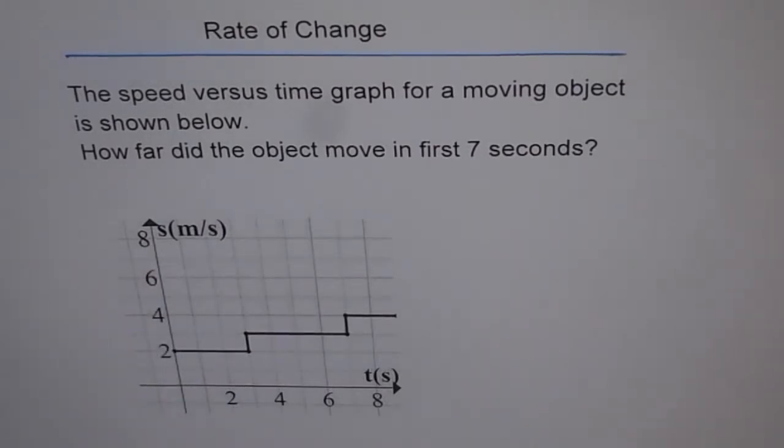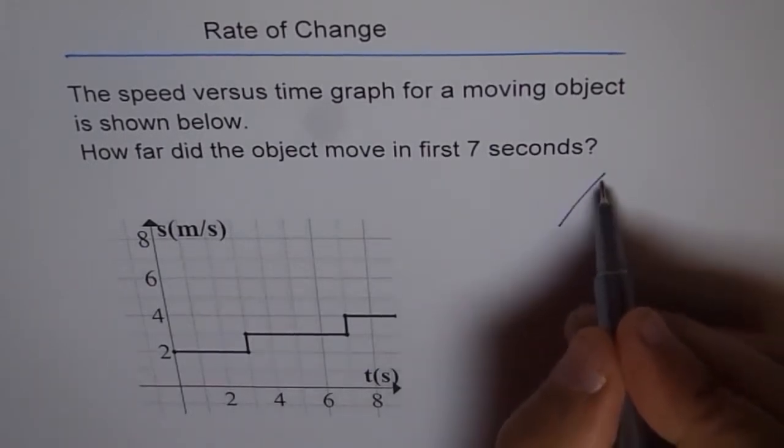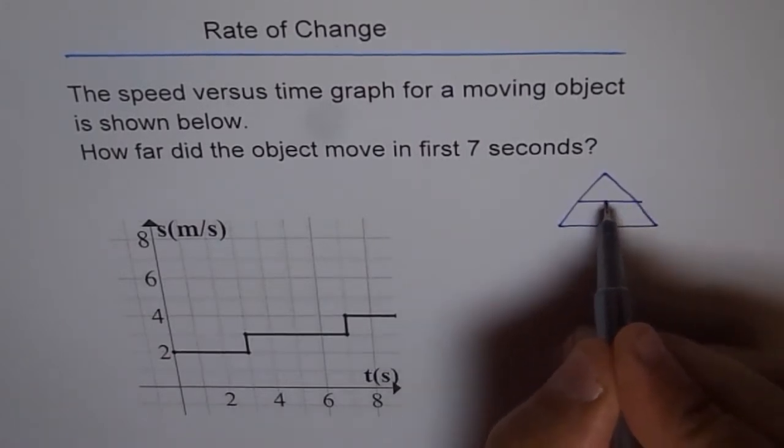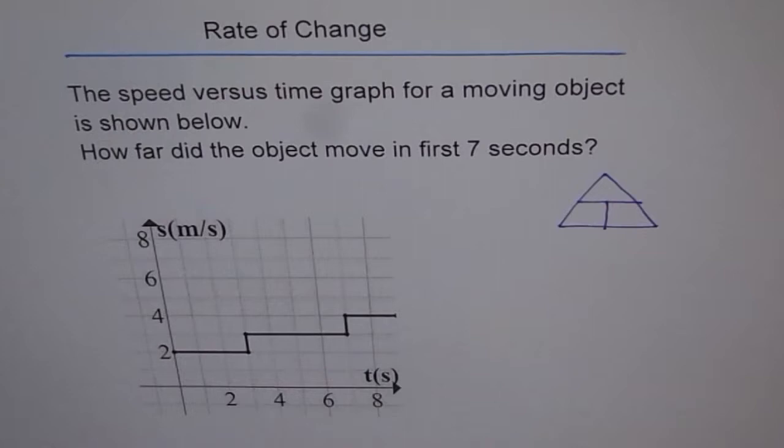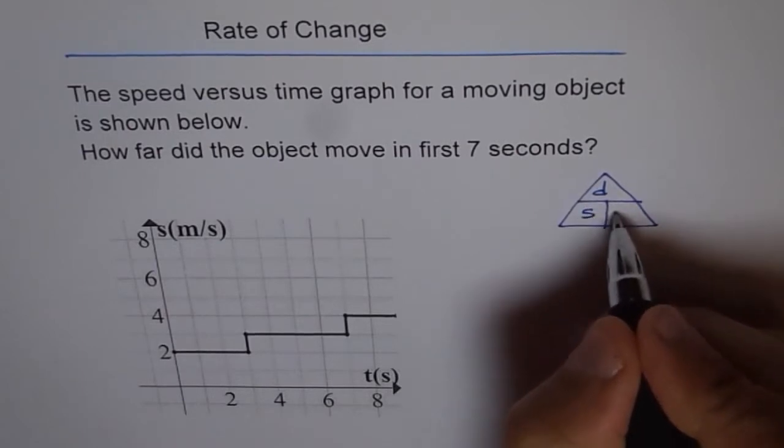And I hope you remember the relationship between distance, time and speed, right? So let's draw this triangle first. So the formula is distance equals to speed into time.